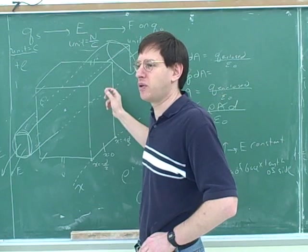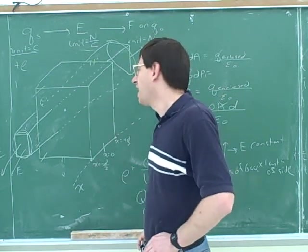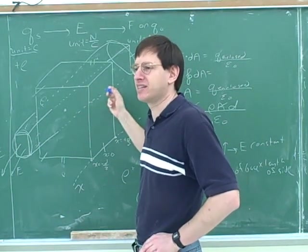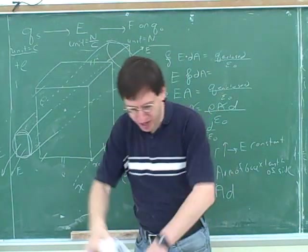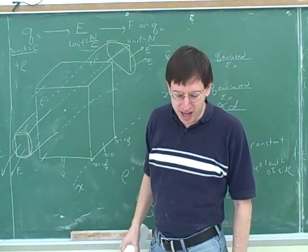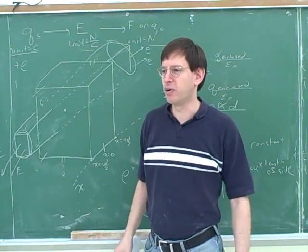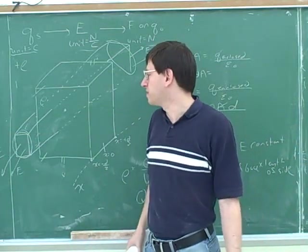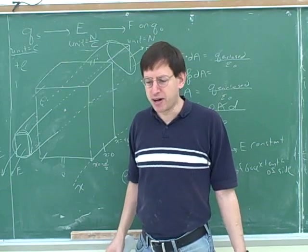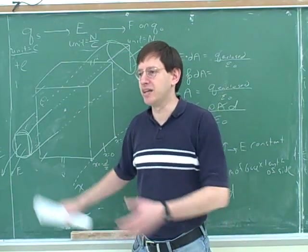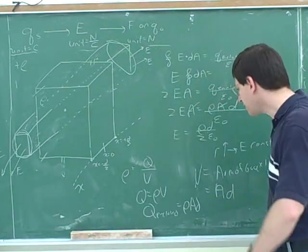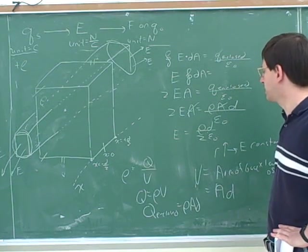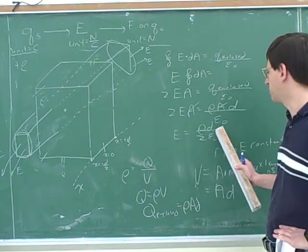Of course, nothing is really infinite in real life. But as long as the slab is much bigger than your distance from the slab, it acts like it's infinite. For example, think about the floor of this classroom and a fly buzzing a millimeter above the floor — to the fly, the floor almost seems like an infinite slab because it can't see the edges. So if you're very close to the slab and not close to one of the edges, you can approximate it as an infinite slab, and the electric field doesn't depend on your distance from the slab.